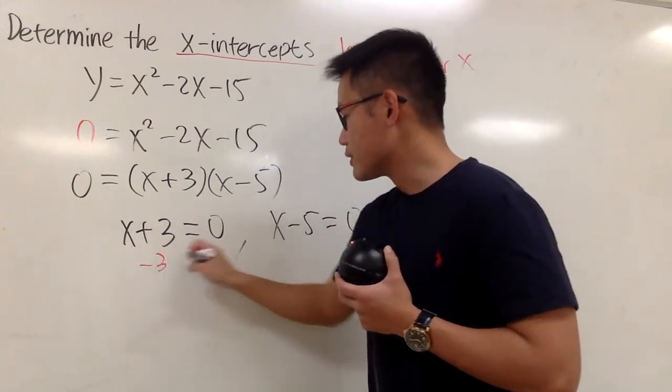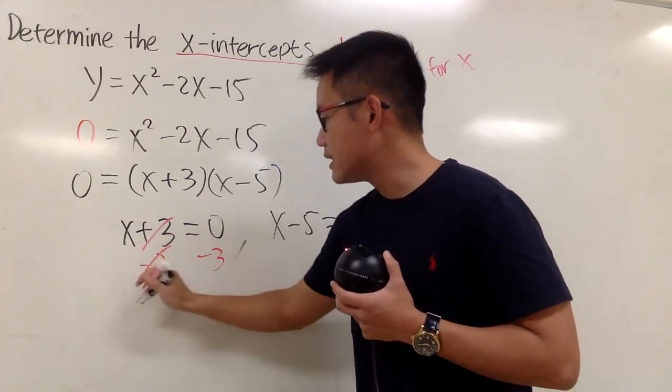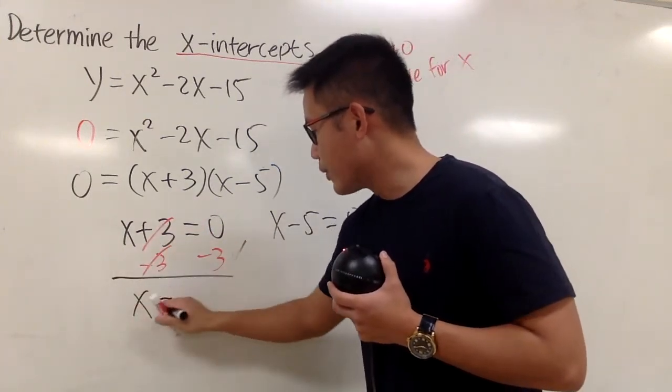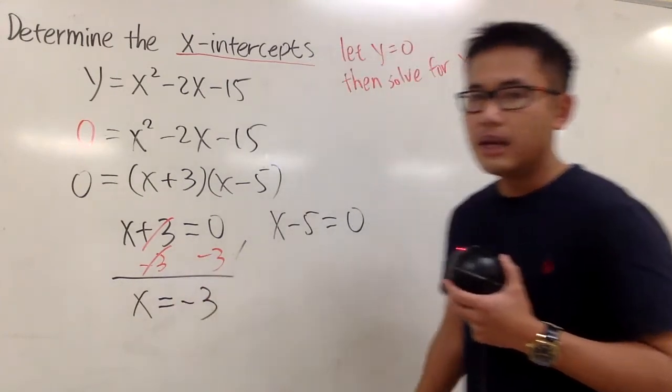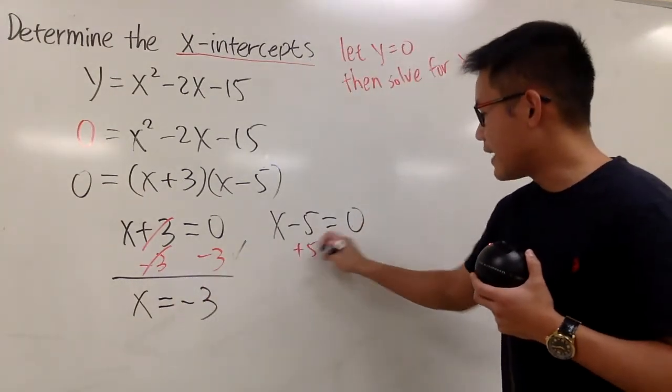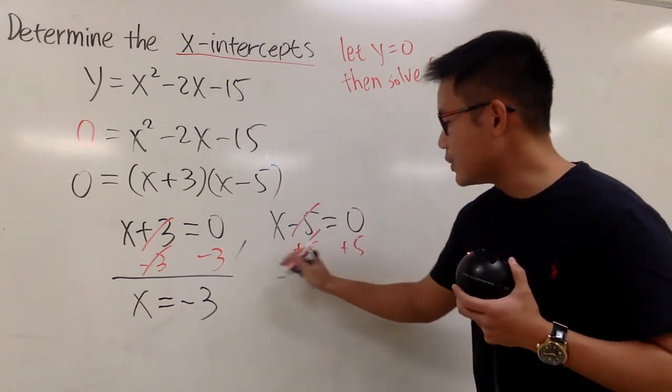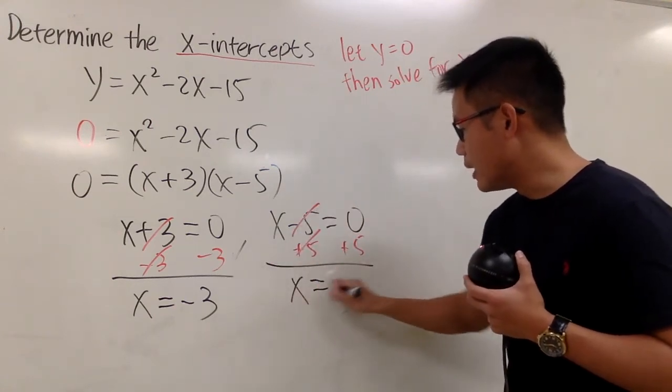Now from here, of course, we can just minus 3 on both sides. And we get x equal to negative 3. And on the other hand, we have plus 5 plus 5, so that we get x is equal to positive 5.